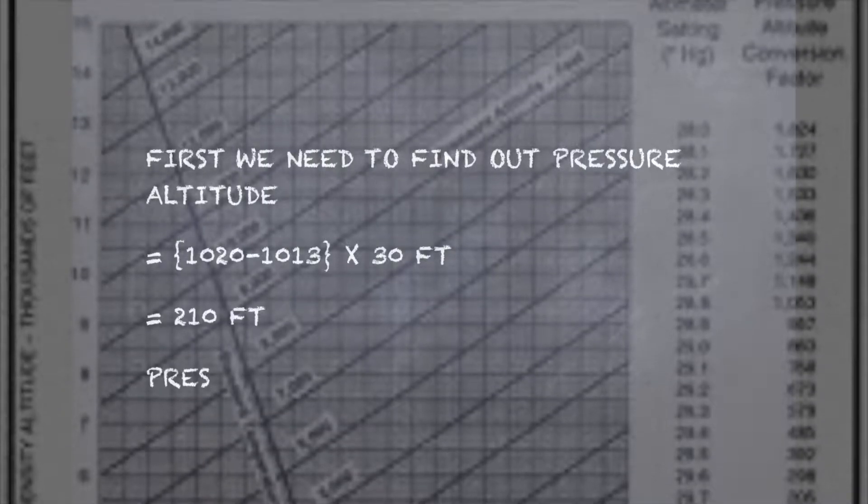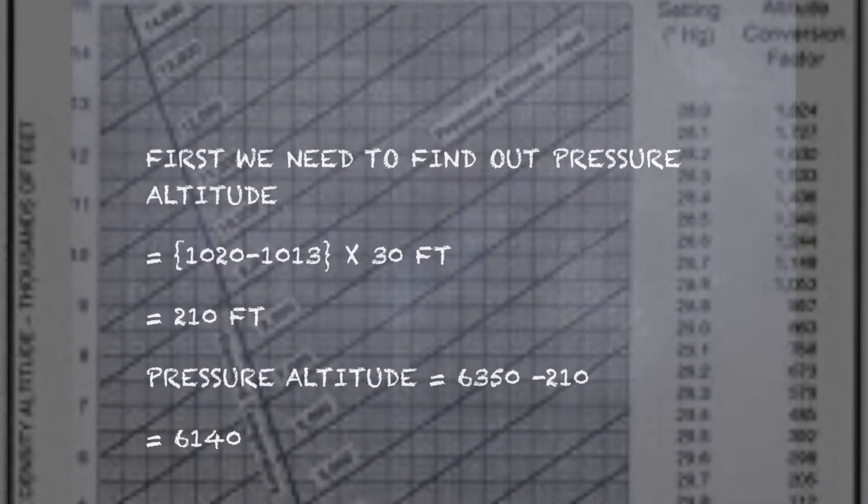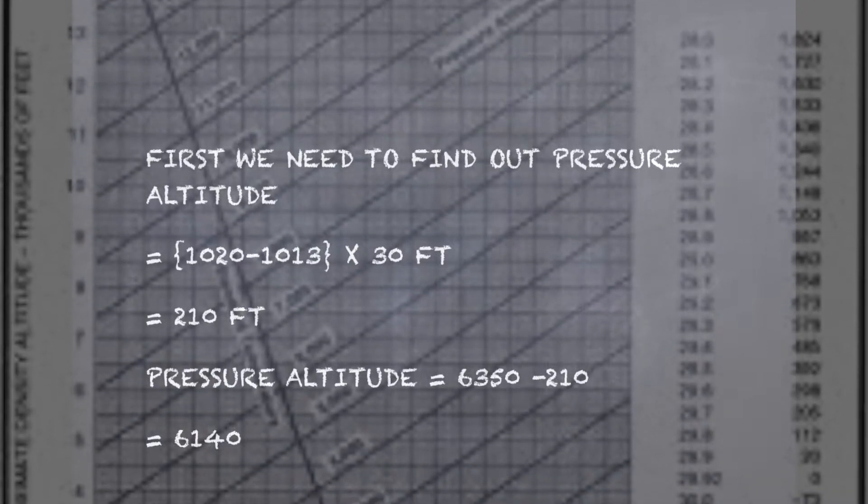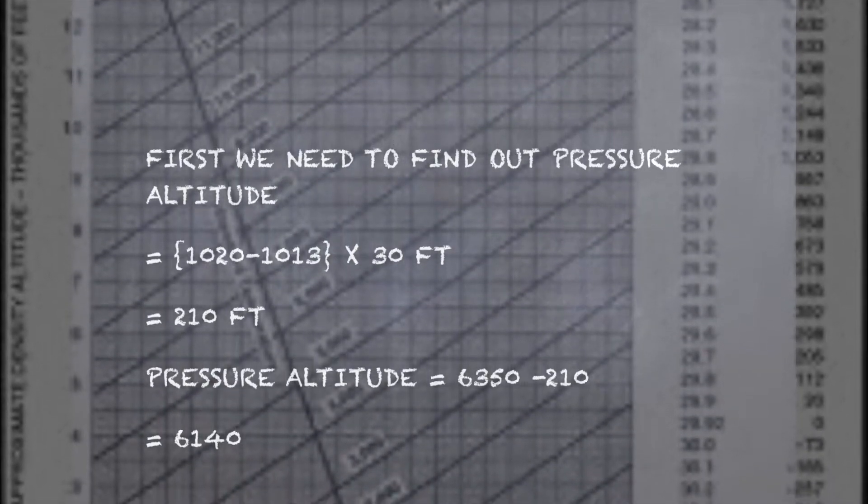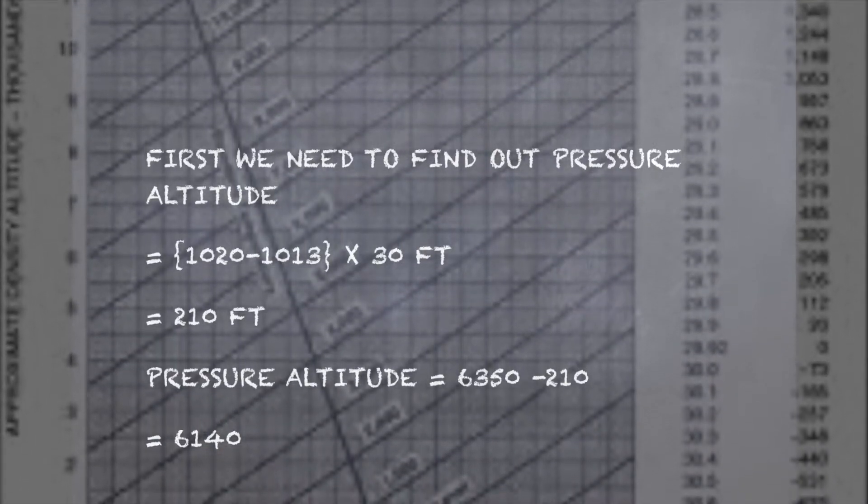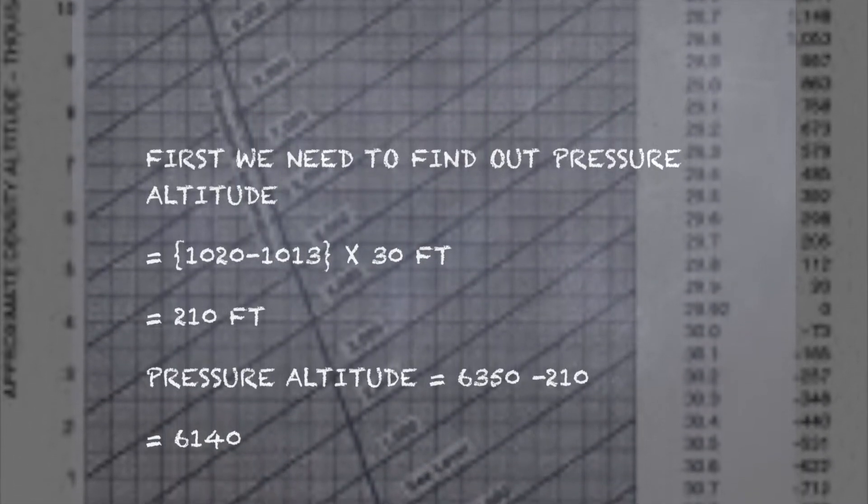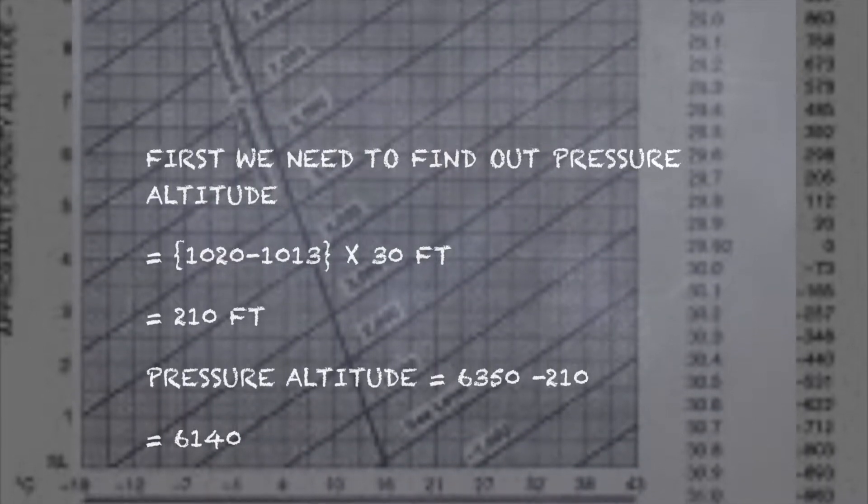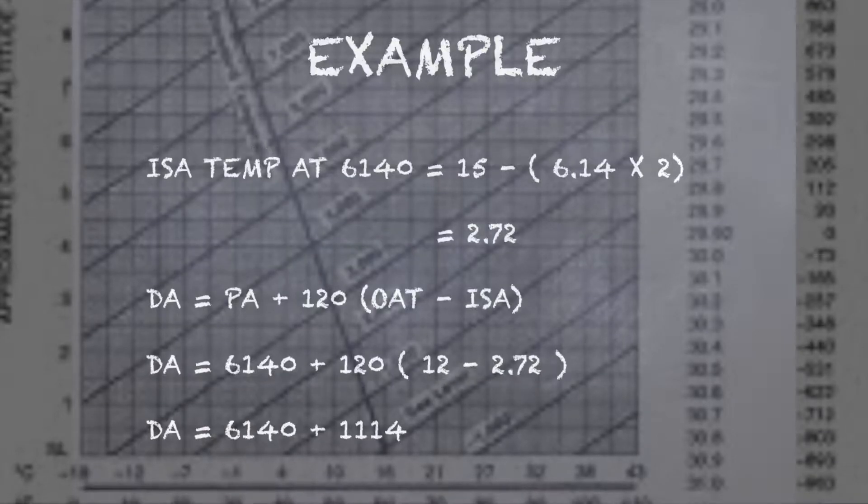Pressure altitude can be easily found out with the help of the QNH. You need to subtract QNH from 1013, that is ISA conditions, times 30 feet, that's lapse rate, which comes to be 210 feet. So pressure altitude is 6350 minus 210, which comes to be 6140 feet.